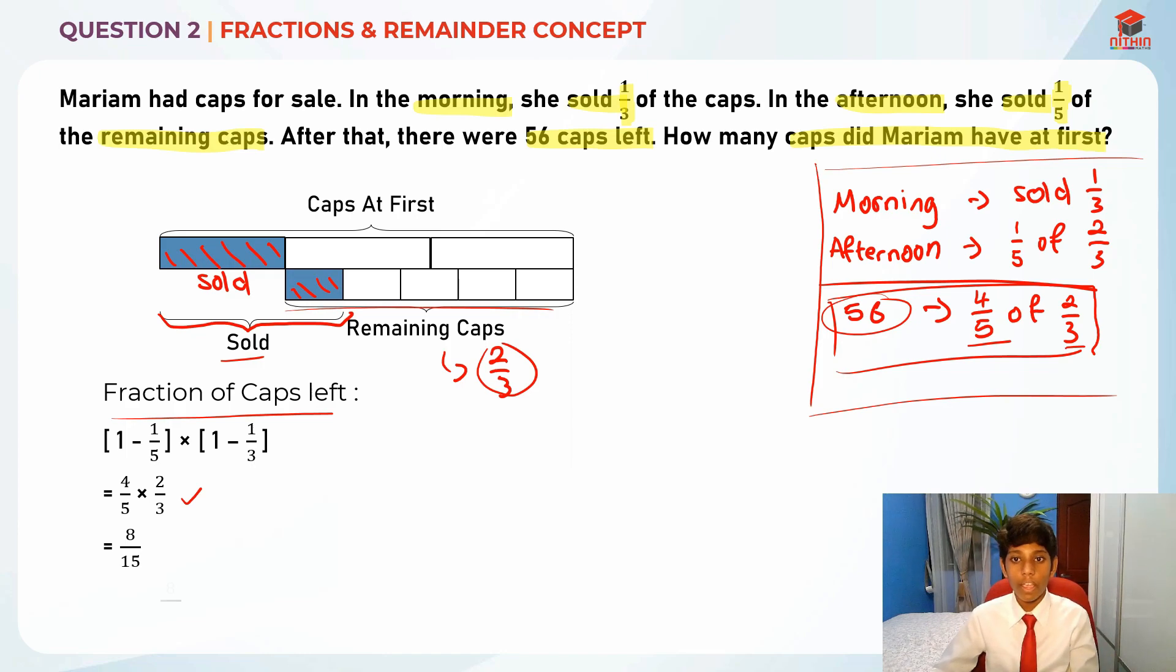Four over five times two over three gives us eight over fifteen, so eight over fifteen is actually 56 caps. Eight over fifteen equals 56 caps. This is really important that we need to know. Eight over fifteen is 56 caps meaning eight units out of fifteen is 56 caps.